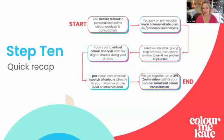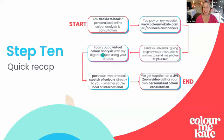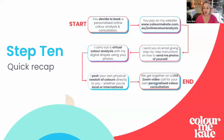And step ten — a quick recap. You've decided you'd like to have a colour analysis but you can't come in person. You pay on my website. I send you an email giving you step-by-step instructions of what to do next. I then carry out a virtual colour analysis using the photos you've sent me. Then I post you your own swatch of colours, wherever you are. Then we get together live on your personalised colour consultation. It's so simple.